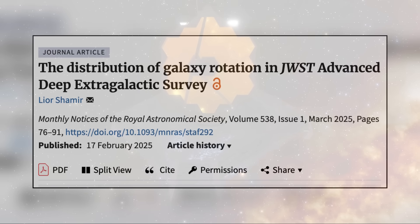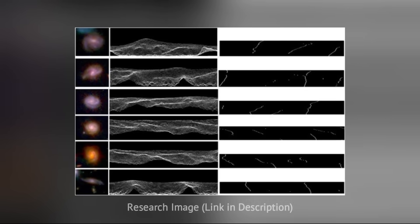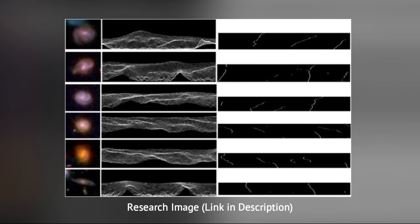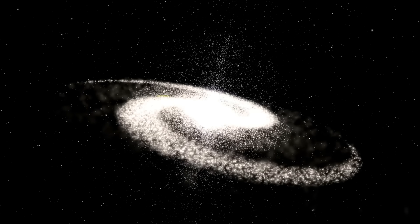A new research analyzing JWST observations of the early universe has uncovered an intriguing mystery. The majority of galaxies appear to be rotating in the same direction. The lines formed by the peaks here allow us to identify the direction of the curve of the arms of the galaxies, and consequently, their spin direction.